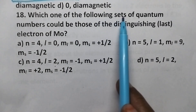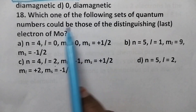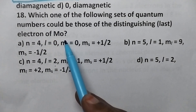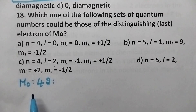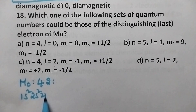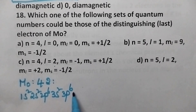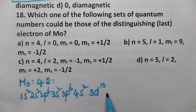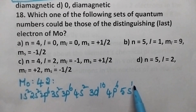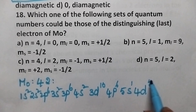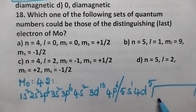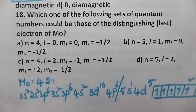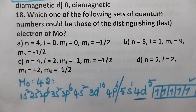Which one of the following sets of quantum numbers could be those of the distinguishing electron of molybdenum? The distinguishing electron means the last electron. Molybdenum has atomic number 42 and its configuration is 1s², 2s², 2p⁶, 3s², 3p⁶, 4s², 3d¹⁰, 4p⁶, 5s¹, 4d⁵. This is similar to chromium — a half-filled configuration. Coming to the detailed structure of 4d, each orbit has a single unpaired electron and the fifth one is the outermost electron.